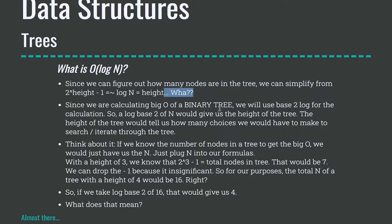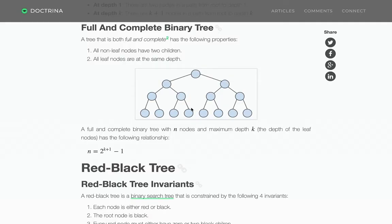So since we're calculating big O of a binary tree, we will use what's called a base two log for the calculations. A log base two of n would give us the height of the tree. The height of the tree tells us how many choices we would have to make to search or iterate through the tree. So if I had a height of one, two, three, four — to get to any of the leaf nodes down here, I could just make one choice, two choices, three choices, four choices. That's the number of choices that I would have to make. So that would be our O(log n).